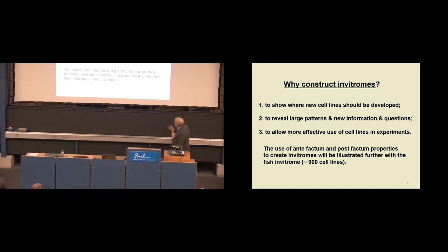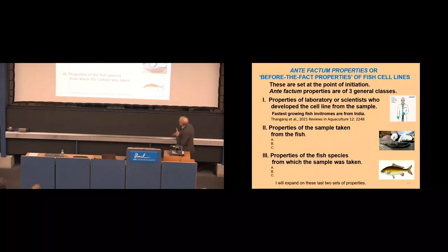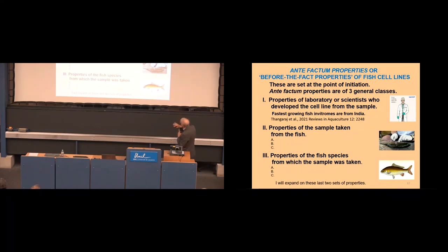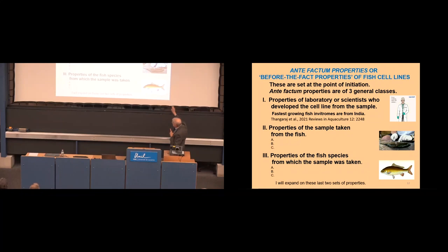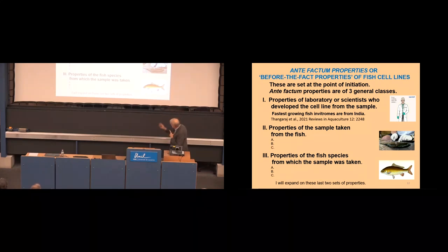So I will illustrate the use of antifactum and post-factum properties with the fish invitrome, which is approximately 900 cell lines. I can't keep up with Cellosaurus. I know there's a very accurate figure. So the antifactum properties of fish cell lines. Remember, these are set at the point of primary culture. So I have them in three categories: the properties of the laboratory or scientists. For example, there are so many Indian scientists publishing on fish cell lines. So I would say the fastest growing fish invitrome is the Indian fish invitrome. So we won't say anything more about that. Properties of the sample taken from the fish, properties of the fish species from which the sample was taken. So I will talk further about those two sets of properties.